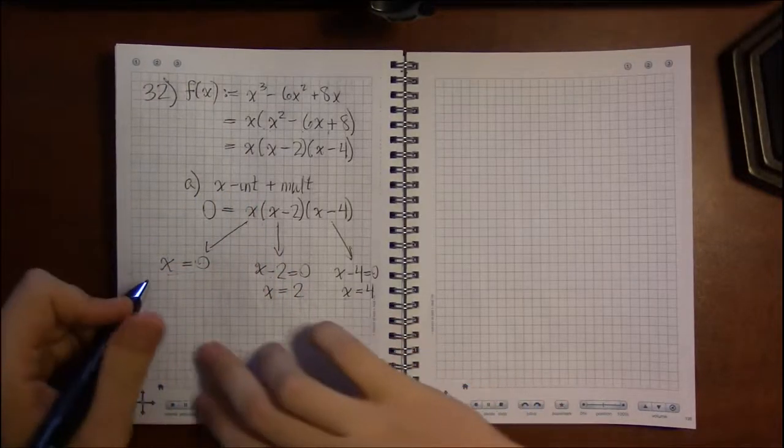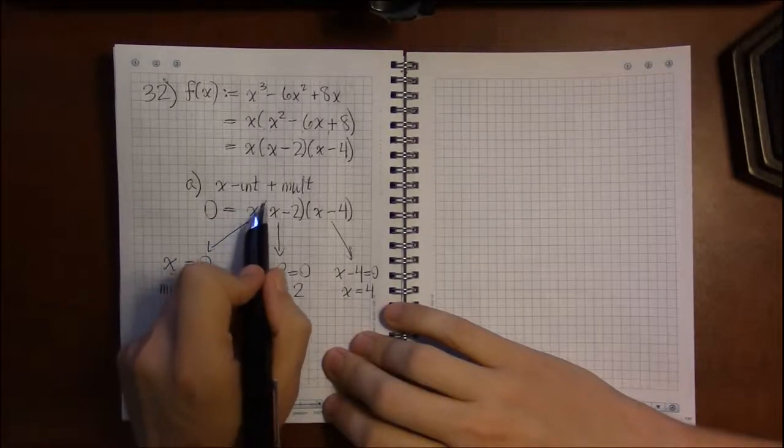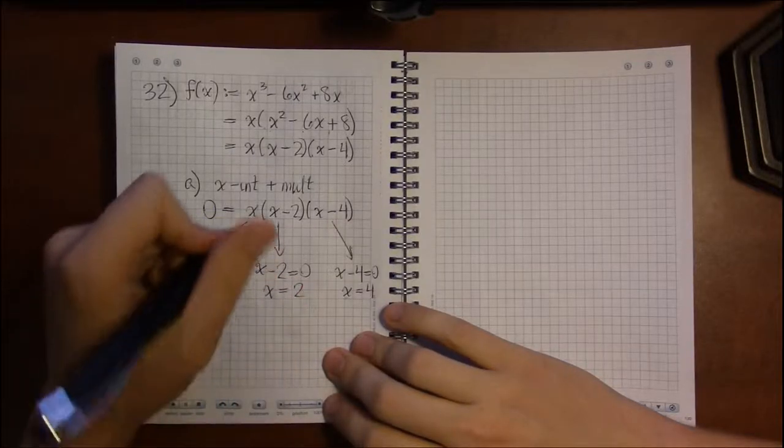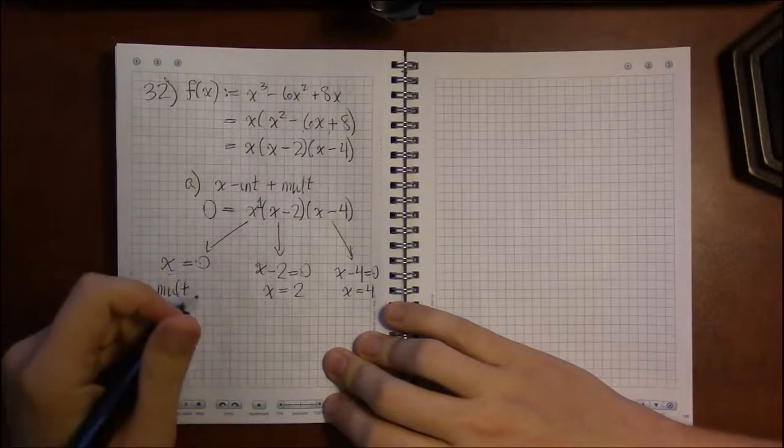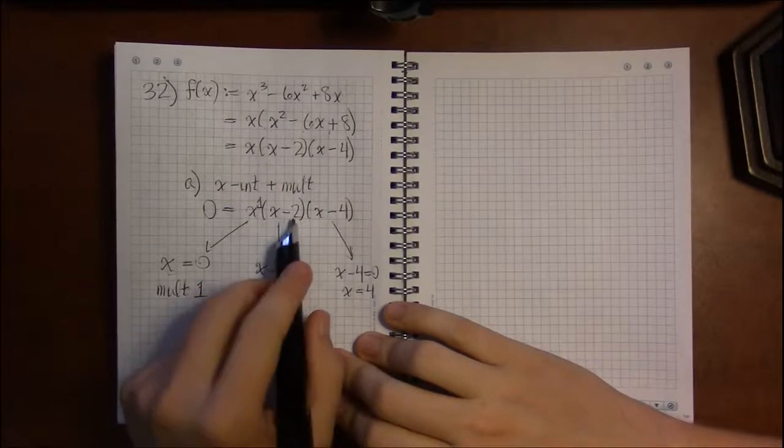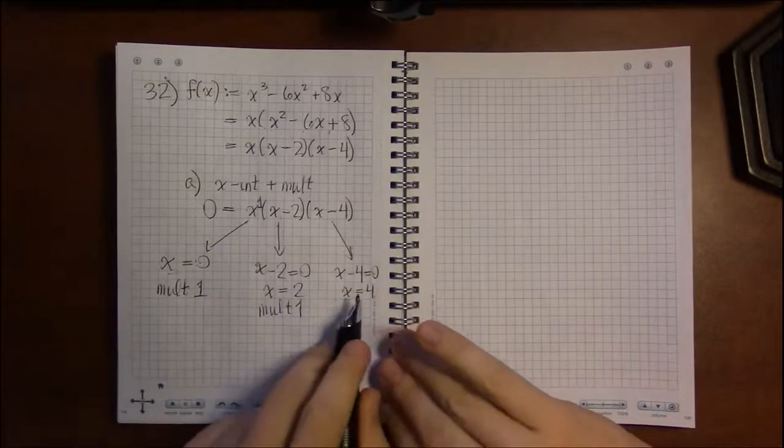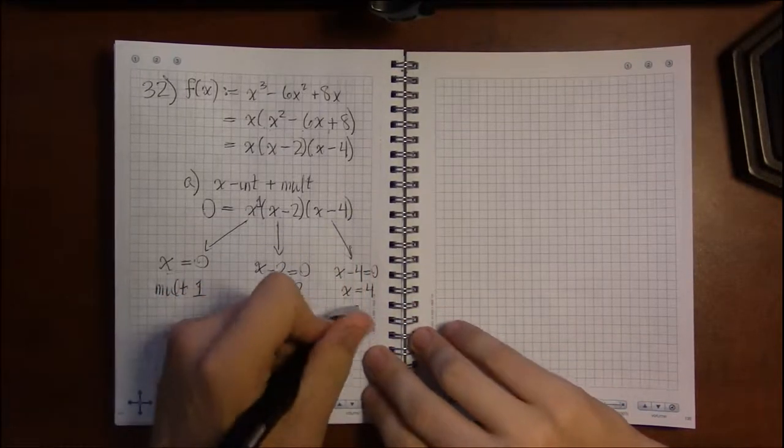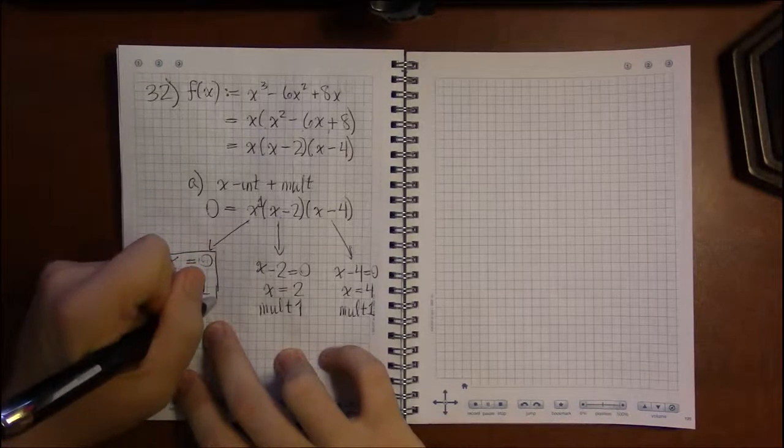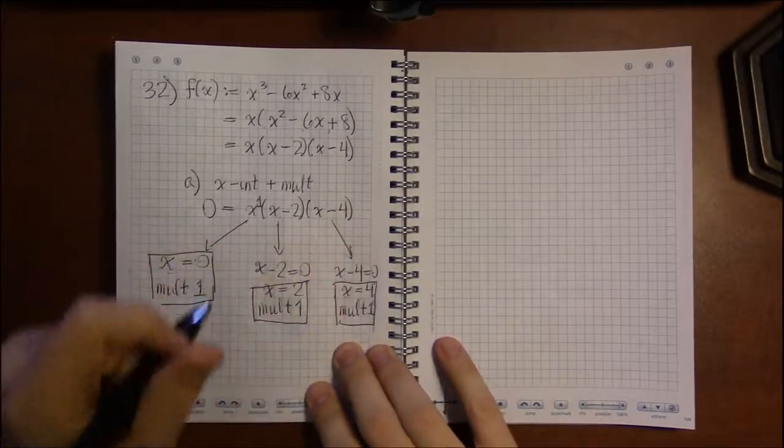But I also wanted multiplicity. So I traced my way back up and looked for the exponent on the corresponding factor that spawned the equation. But here I don't see an exponent. Well that means the exponent is 1 because anything to the first power is just itself. So this has multiplicity 1. x equals 2, stepping this back, also has multiplicity 1. Nothing was there so it means it's 1. And 4 same thing, stepping this back, no exponent, that means multiplicity 1. So each x-intercept here has multiplicity 1: 0, 2, and 4 all of them have multiplicity 1.